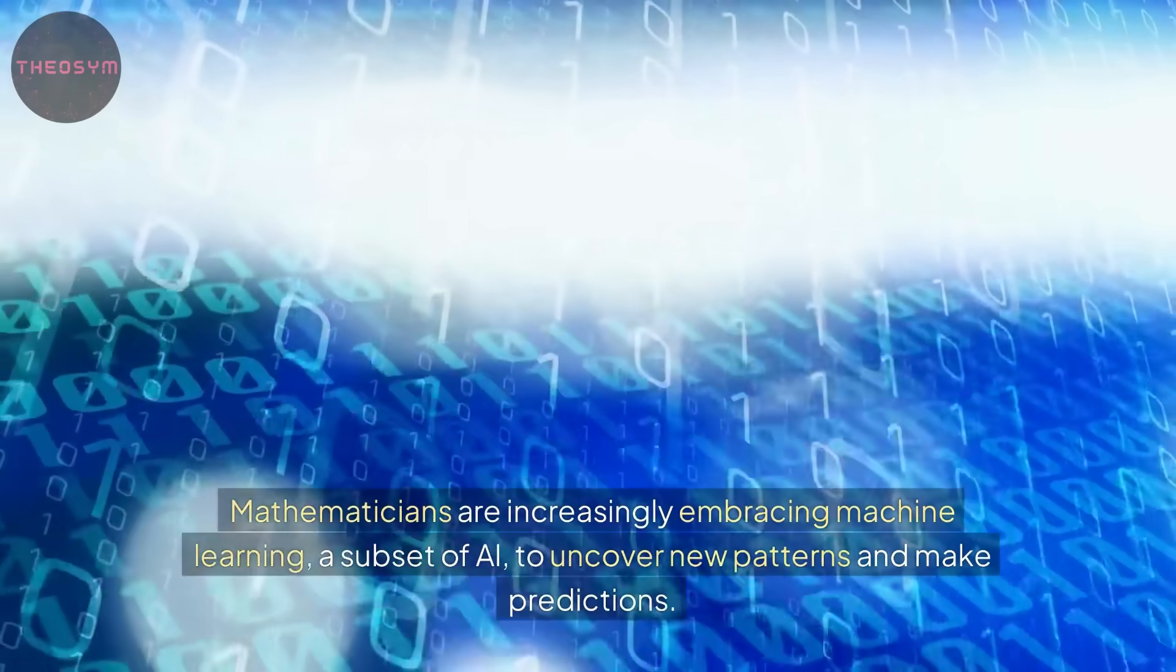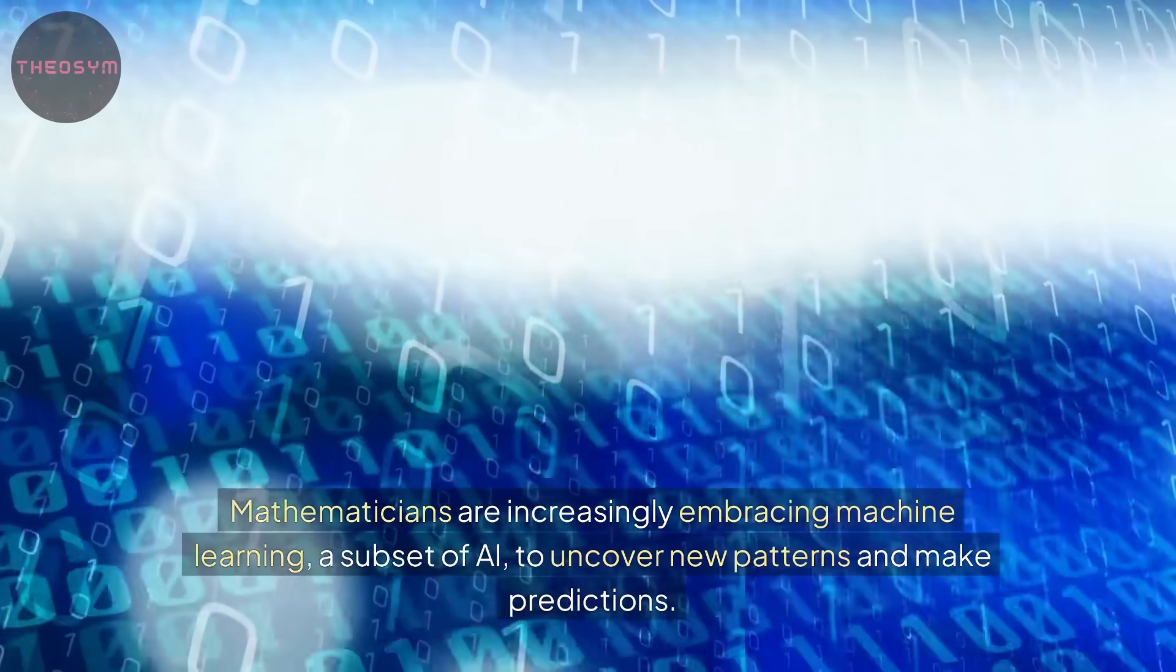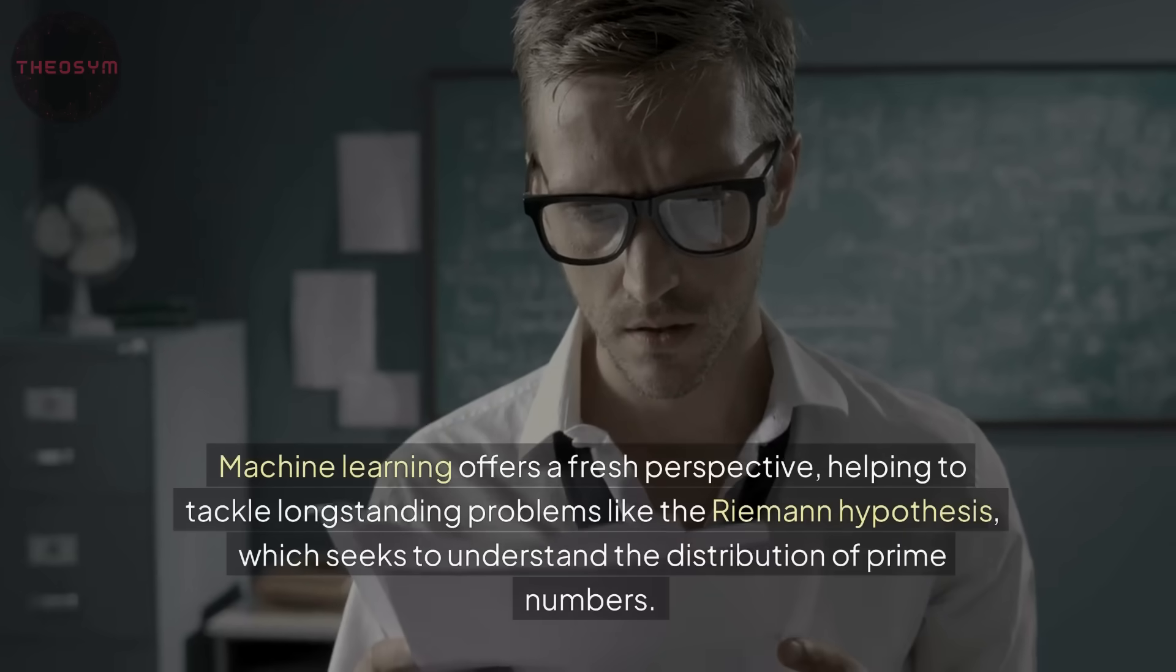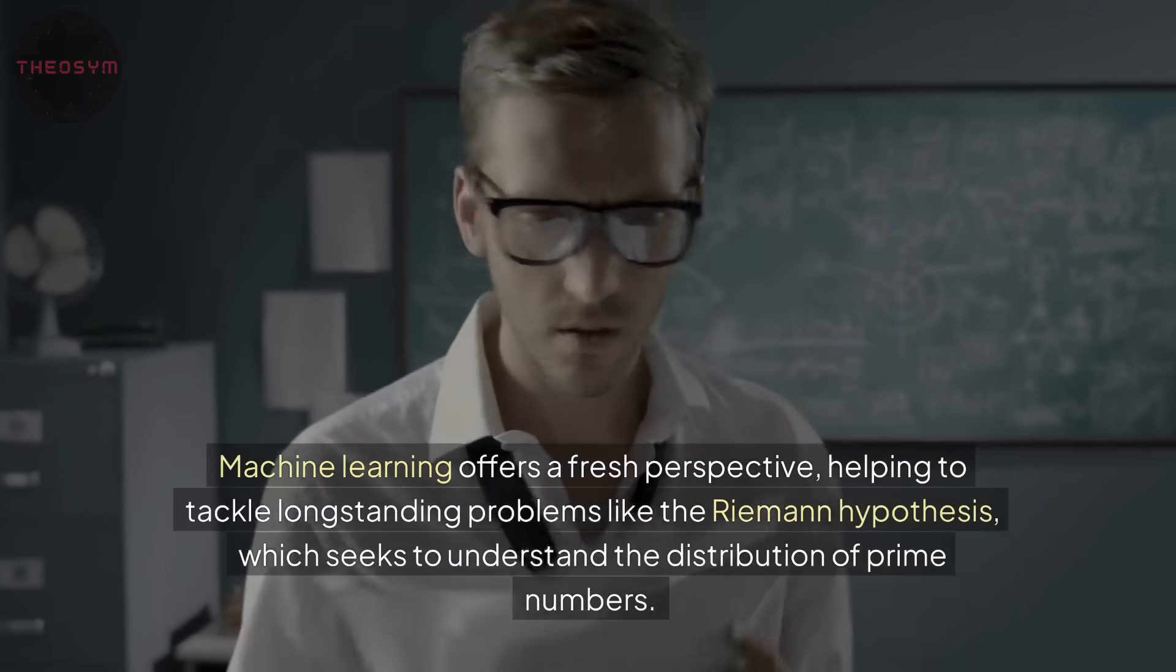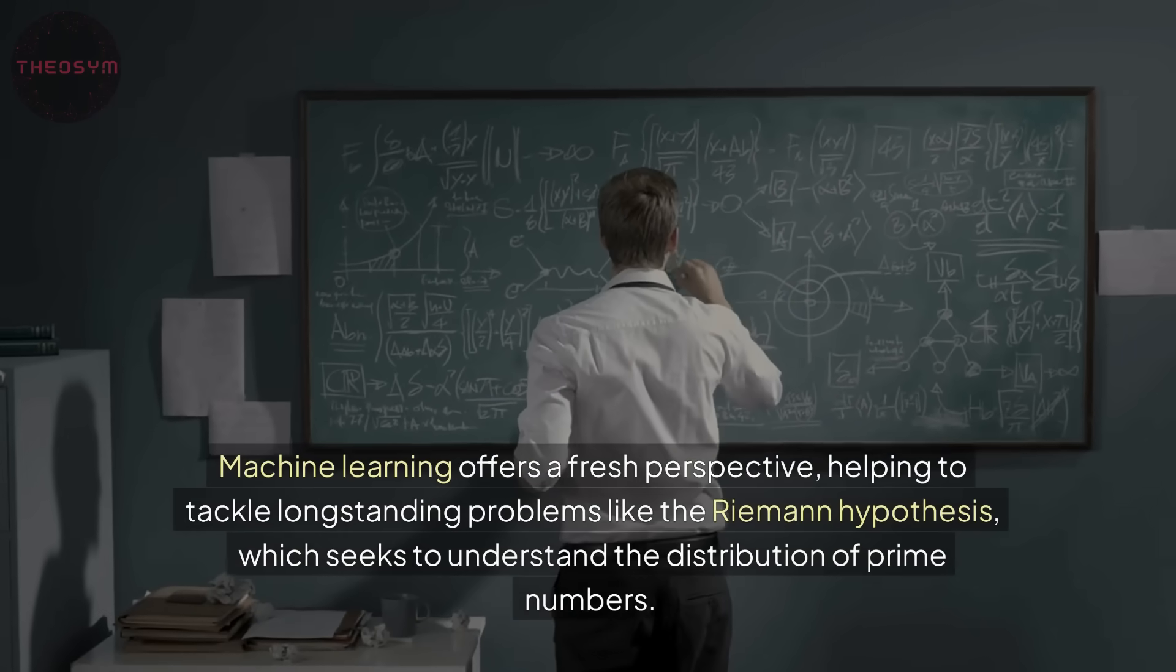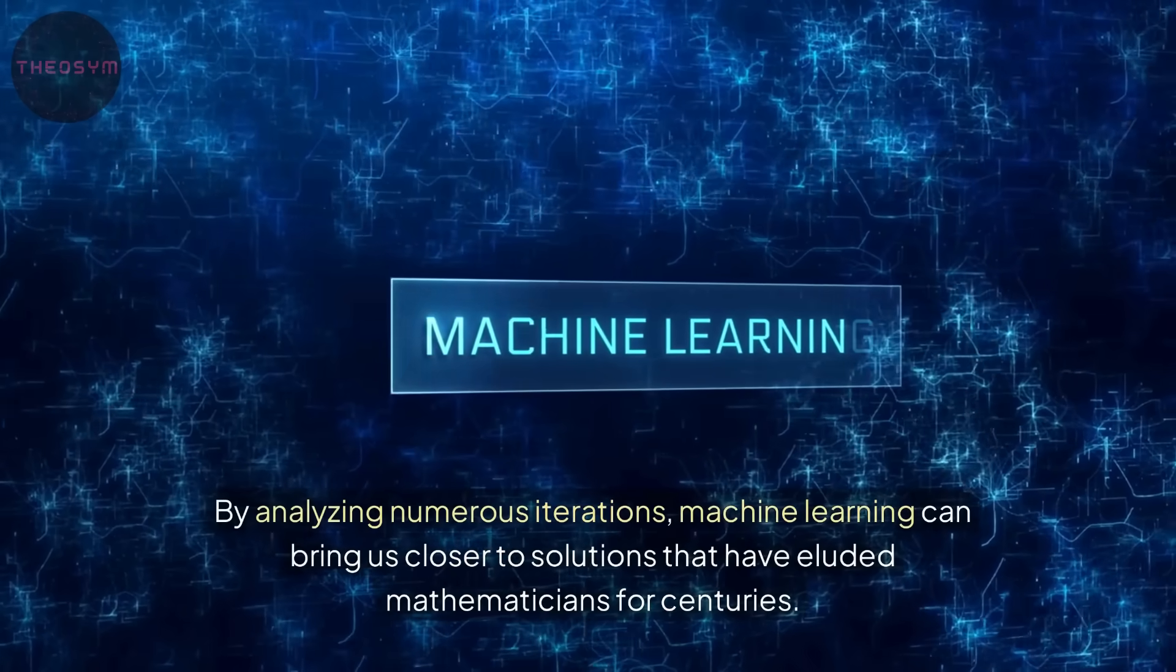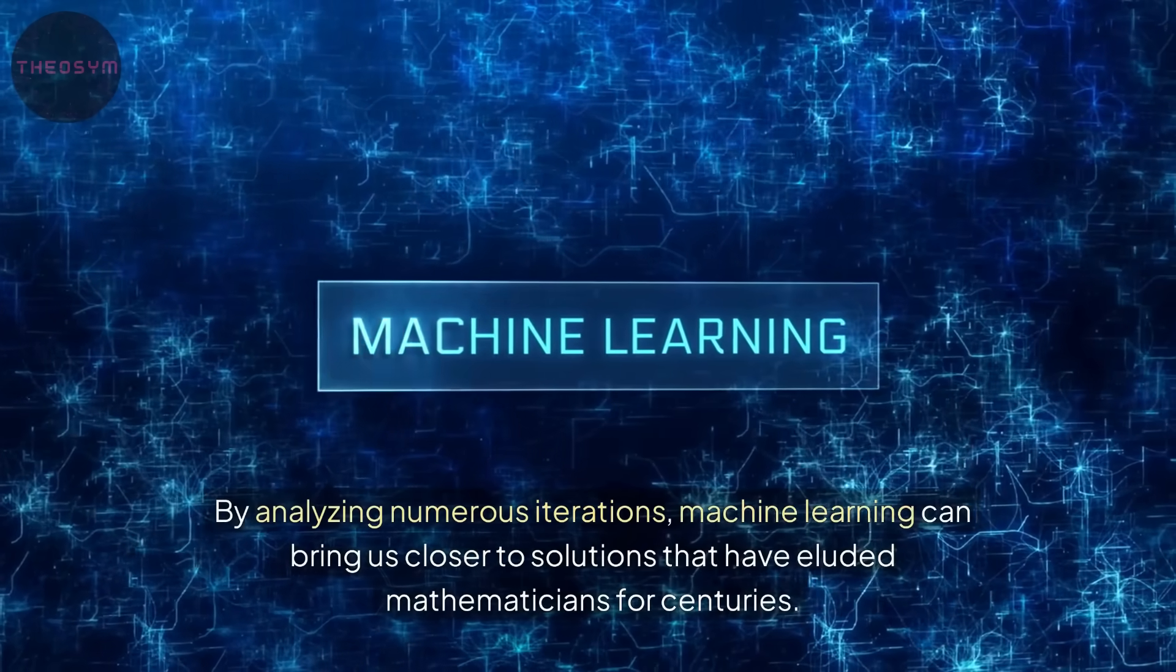Mathematicians are increasingly embracing machine learning, a subset of AI, to uncover new patterns and make predictions. Machine learning offers a fresh perspective, helping to tackle long-standing problems like the Riemann hypothesis, which seeks to understand the distribution of prime numbers. By analyzing numerous iterations, machine learning can bring us closer to solutions that have eluded mathematicians for centuries.